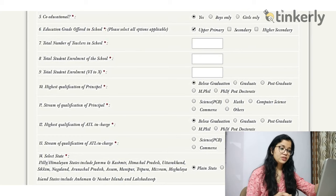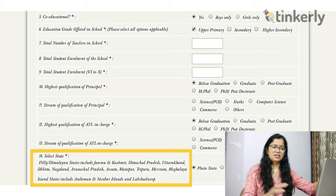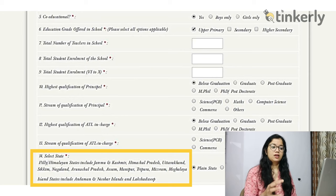The next question asks you to select the state or demography region your school is in — whether it is a plain area, hilly area, or island. In most cases for central or south India, you select plain. For Seven Sisters or Jammu and Kashmir, you select hilly or Himalayan region. Once you give all this information, click Next.